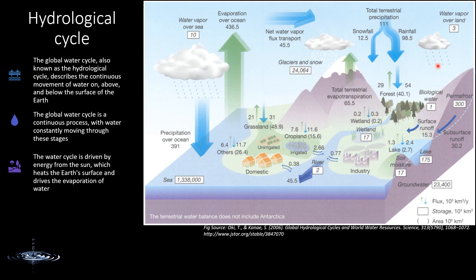Precipitation is the process by which water is released from the atmosphere, which can be rainfall, snow, and hail. Evapotranspiration is the process through which water is returned to the atmosphere through evaporation from the land surface and transpiration through plants. Now let's divide the components of the hydrological cycle into flux and storage.